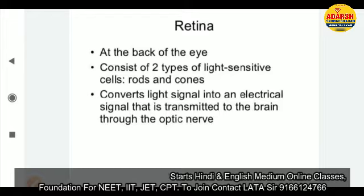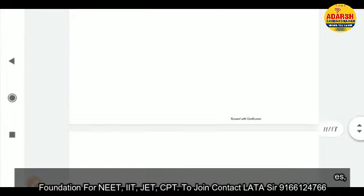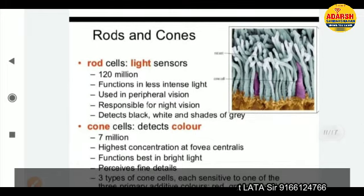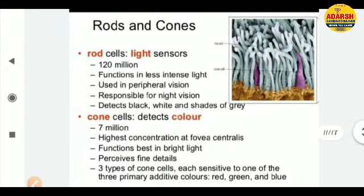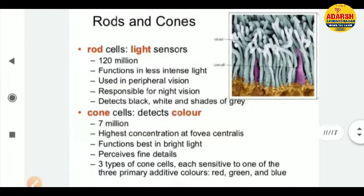The retina converts light signals into electrical signals and sends them through the optic nerve to the brain. Rods and cones — rod cells are light sensors that work in dim light, used in peripheral vision, responsible for night vision, and detect black, white, and shades of grey. There are 120 million rod cells. Cone cells detect colors — there are 7 million of them.